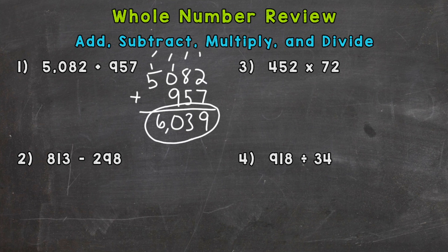Number 2: subtraction. Same as addition — we need to make sure our places are lined up, then we can subtract. So we have 813 minus 298.